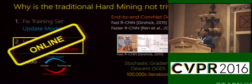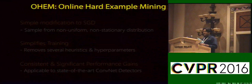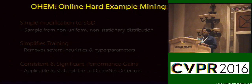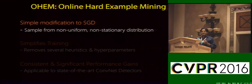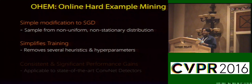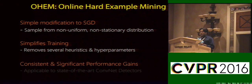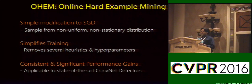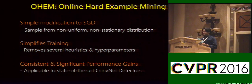To address these issues, we propose a new bootstrapping technique which we call Online Hard Example Mining — a simple modification to the SGD training paradigm, where instead of sampling randomly, we sample from a non-uniform, non-stationary distribution. Our method simplifies training by removing several heuristics and hyperparameters, and while doing so, provides consistent and significant performance gains. More importantly, it can be easily applied to most state-of-the-art object detectors.